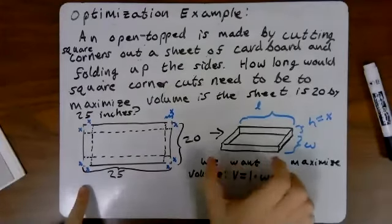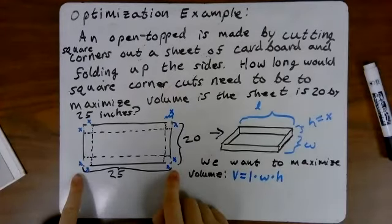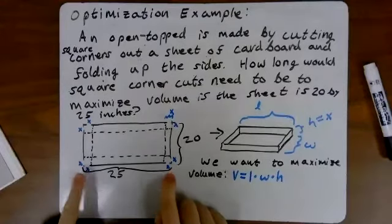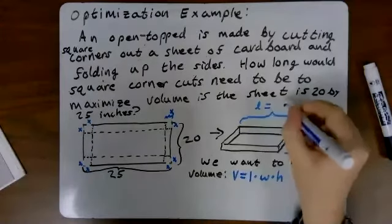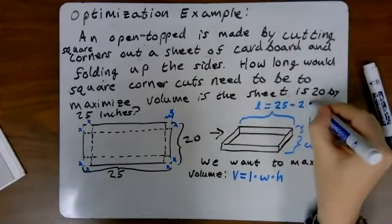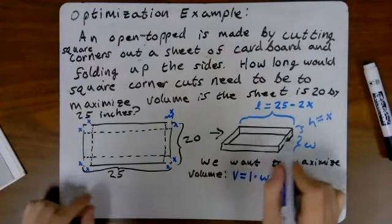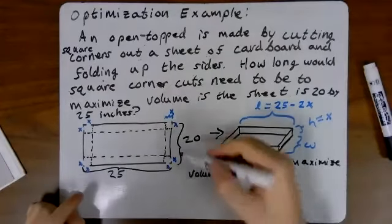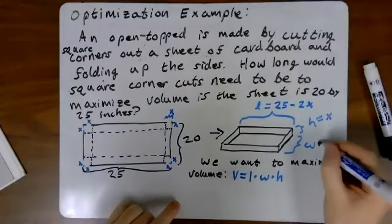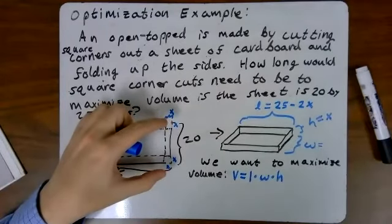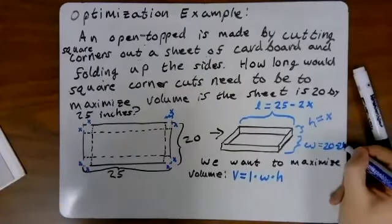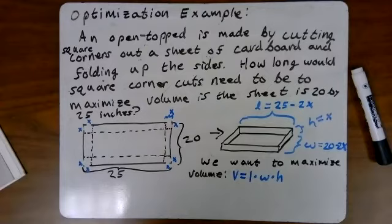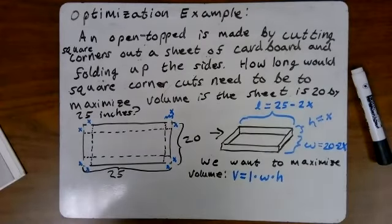What about how long will our box be? Well, our original sheet of cardboard was 25 inches. Two x's were cut out from each side there. So this length is going to be 25 minus the cut taken from each side. The width is going to be similar here. We have 20 inches of width, and two x's are being cut out of it. So our width is going to be 20 minus 2x. Does this make sense so far?